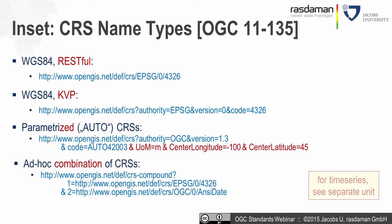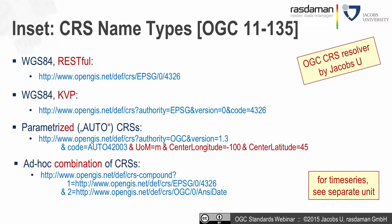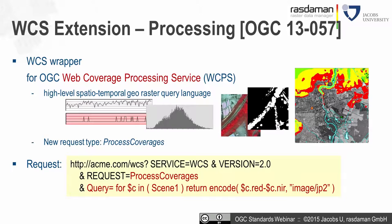There will be a separate unit specifically devoted to time series and multi-dimensional work. The CRS resolver running at OGC was implemented by Jacobs University and is available in open source as part of the RASDAMAN software. The processing extension is a wrapper defining request types for the OGC Web Coverage Processing Service, or WCPS — a high-level spatial-temporal georaster query language where you phrase requests ad-hoc, working on rasters and multi-dimensional grids with space and time semantics.